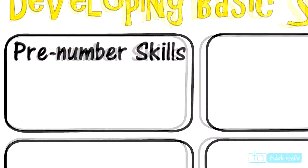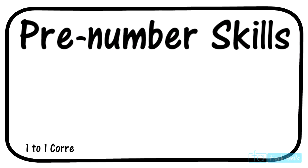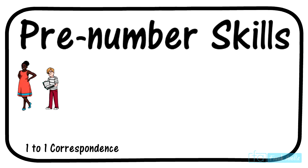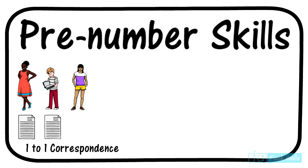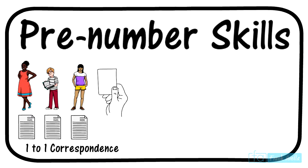Let's begin with pre-number skills and one-to-one correspondence, which is basically an understanding that each object in a group can be counted only one time. So if you hand out three pieces of paper, each student gets only one piece of paper — each piece corresponds to one student. When teaching with flash cards, showing the number three, have three objects on the card.